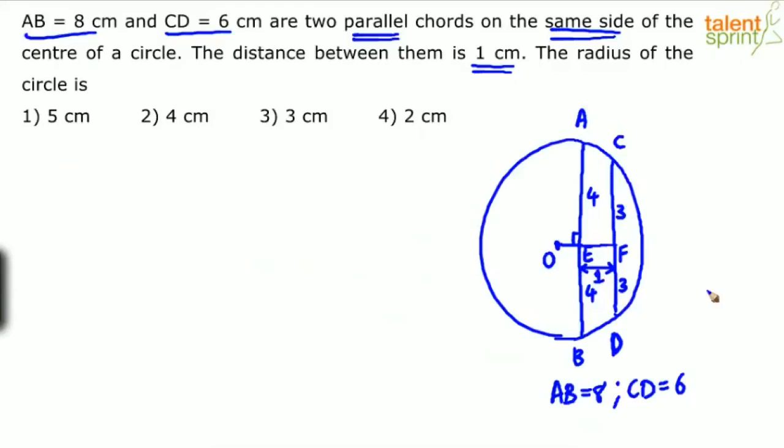Now we are supposed to find out the radius. Let us assume from O to E, this distance is X. Let us assume this distance is X. O to E, the distance is X.